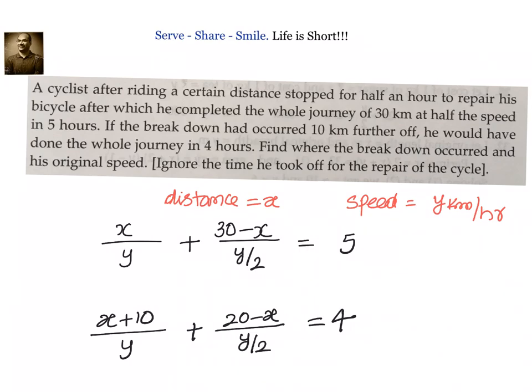Now, these are the two equations you have to solve and you have to get our x and y values. Let us simplify them. We can write down x plus 60 minus 2x divided by y equal to 5. Or can I write down, after simplification, x plus 5y equal to 60. That will be my first equation.